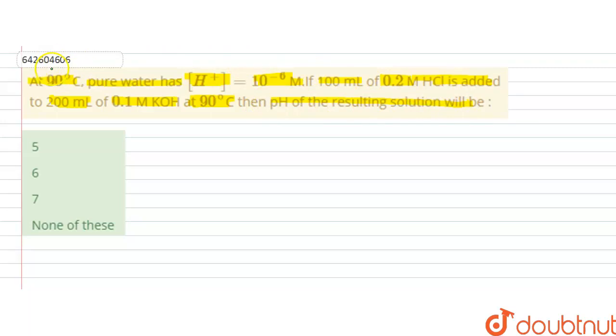So in this question, we are given that at 90 degrees Celsius, pure water has H plus ion concentration equal to 10 raised to the power minus 6 molar, and 100 ml of 0.2 molar HCl is added to 200 ml of 0.1 molar KOH. Then we have to find out the pH of resulting solution.